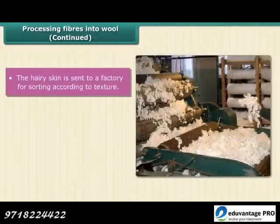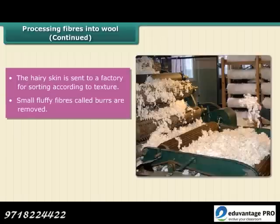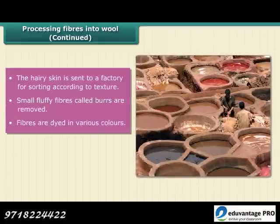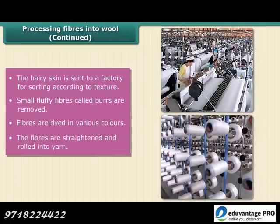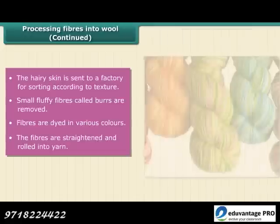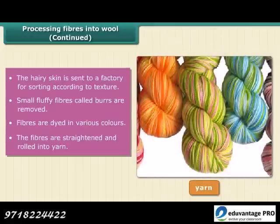The washed hairy skin is sent to a factory where hair of different textures are separated or sorted. The small fluffy fibers called burrs are picked out from the hair. Fibers are dyed in various colors, as the natural fleece of sheep is black, brown, or white. The fibers are then straightened and rolled into yarn, and finally the wool is ready to use.